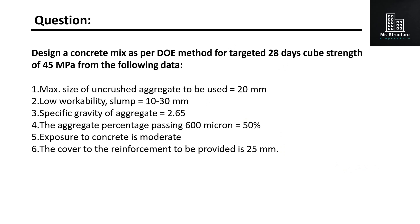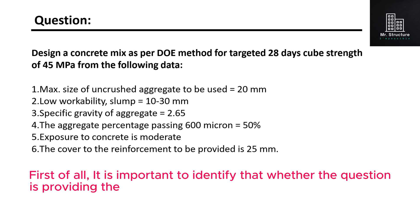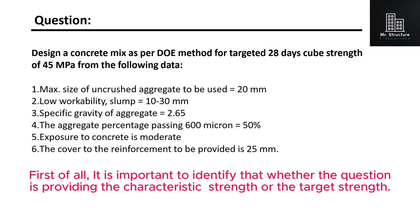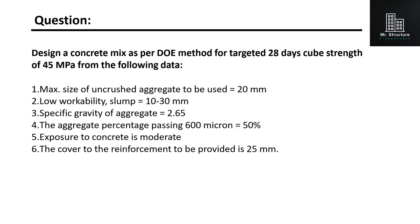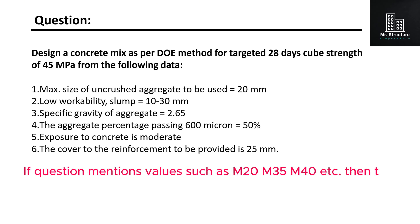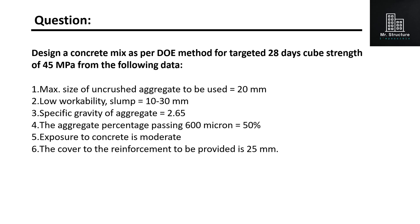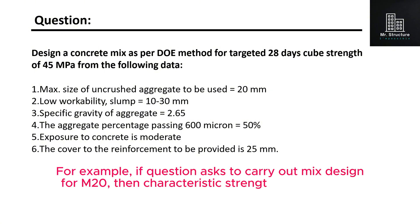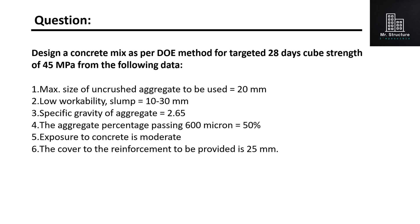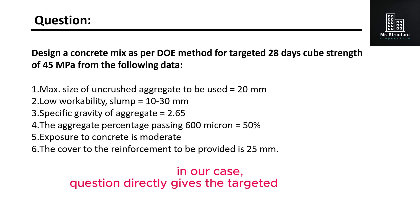You can see the problem on your screen. First of all, it is important to identify whether the question is providing the characteristic strength or the target strength. If the question mentions values such as M20, M35, M40, etc., then the value after M indicates the characteristic strength of concrete in MPa. For example, if the question asks to carry out mix design for M20, then characteristic strength will be 20 megapascals. In our case, the question directly gives the targeted strength FT.